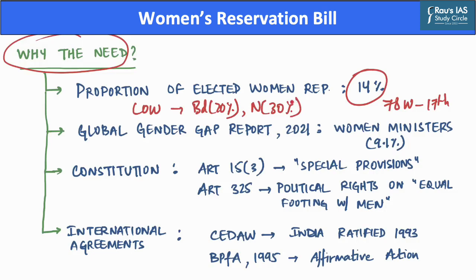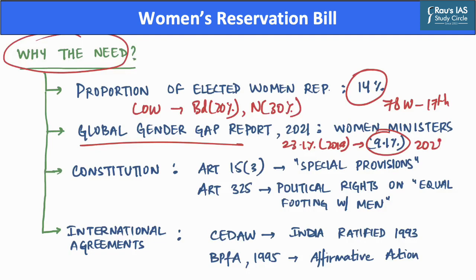Hence, there is a need to increase women's participation in Indian Parliament. The Global Gender Gap Report of 2021 highlighted a decline in the number of women ministers in India — from 23.1% in 2019 to 9.1% in 2021 — which is way short of the international average of around 22% women ministers. Development in India has been severely hampered by the breadth of the gender gap and limited female participation in traditionally male-dominated institutions.